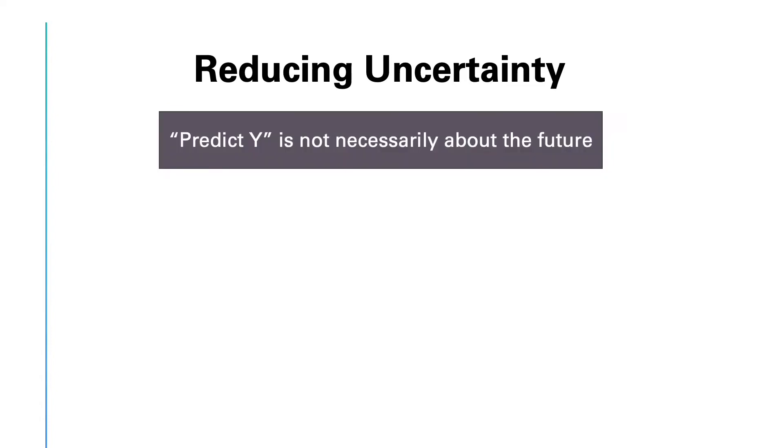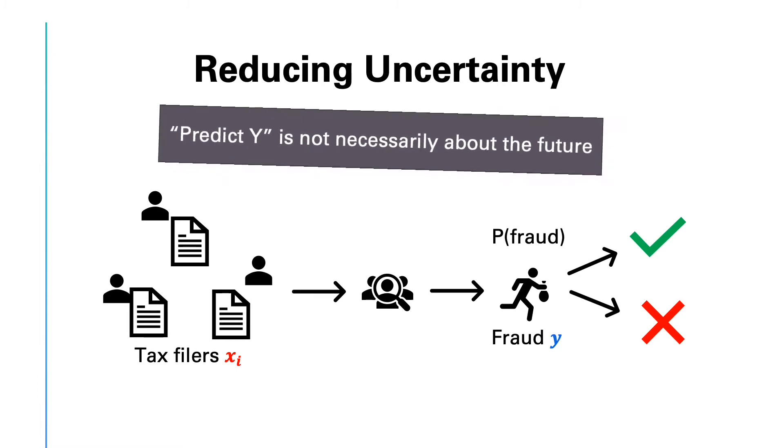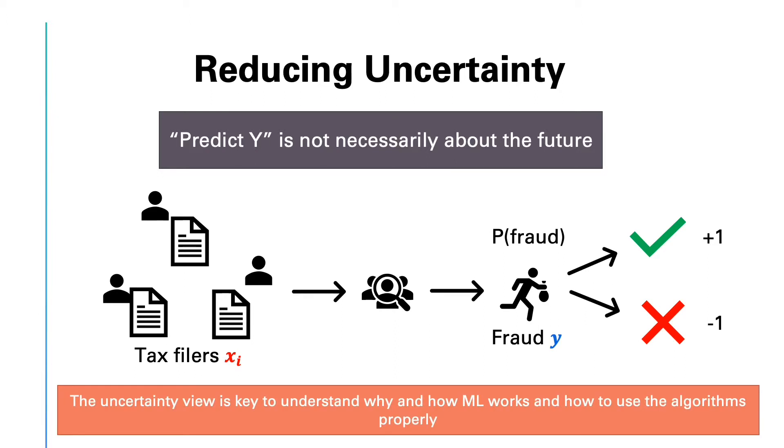For example, let's say that based on the features in tax filers data, you want to know if there was a tax fraud or not. You might have historical data of many people that filed their taxes in the previous years, and if the output of that process was a fraud or not. Now, you might want to develop a machine learning program that computes the probability of tax fraud for the recent tax period. The fraud might have happened in the past, so it is not necessarily about the future, but still we might call it predicting because it is about reducing uncertainty about the variable y. This uncertainty view is important in understanding why and how machine learning algorithms work, and eventually how to use them properly.